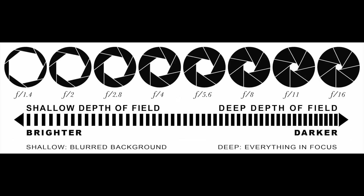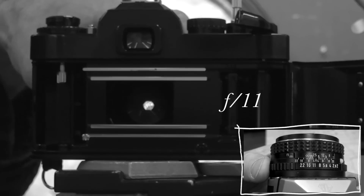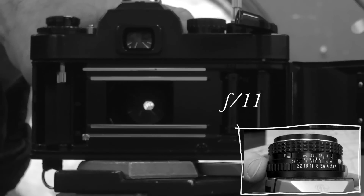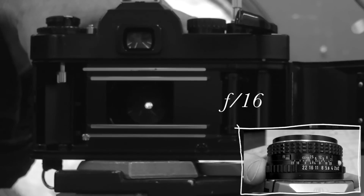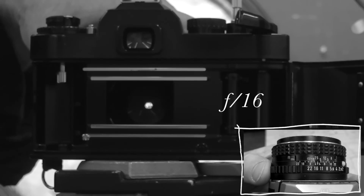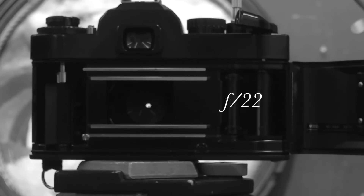Number two: stopping down the aperture increases your depth of field. At f2 you have shallow depth of field in front of and behind the object you're focusing on. At f8 you start to get more depth of field, and at f11 even more — with less light coming in. Finally at f16, and this camera goes all the way to f22, which is the smallest aperture. f22 is great for a bright sunny day outdoors, or indoors when you want great depth of field, though you'll need a tripod.